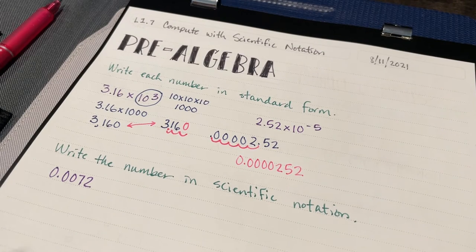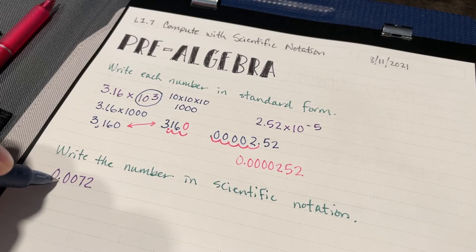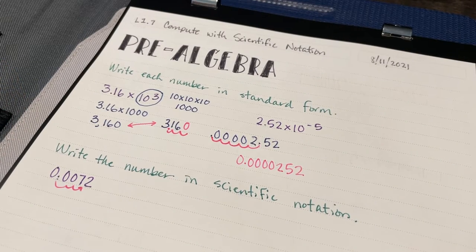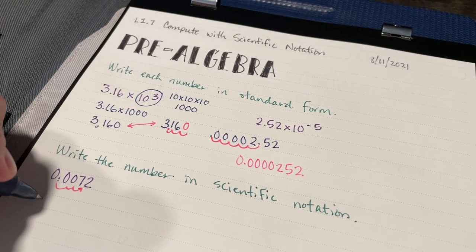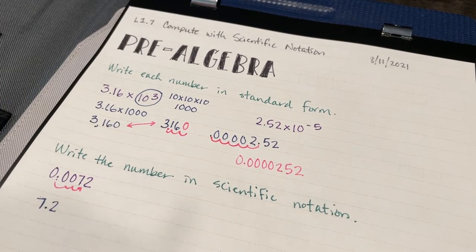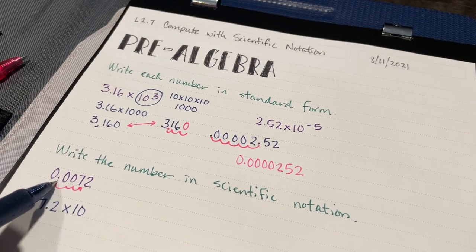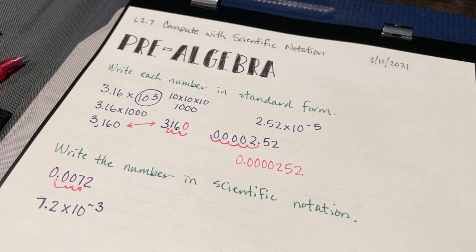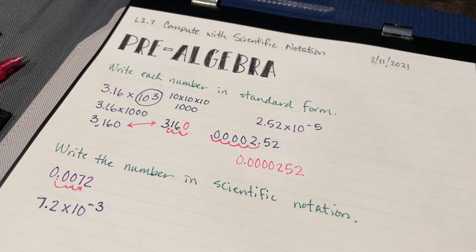Now in this problem I need to move my decimal place one, two, three spaces so that my factor is a number greater than or equal to one and less than 10. So I have 7.2 times 10 to the — I moved it three places — and I'm going to have a negative exponent, because my original number is less than one whole.